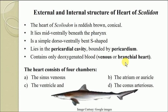The heart of Scoliodon is four-chambered, which is a characteristic feature of cartilaginous species. It contains four chambers: namely, sinus venosus, then the atrium also known as the auricle, then the ventricle which is the third chamber, and the fourth one is the conus arteriosus. There are two major chambers and two accessory chambers — the accessory chambers being the sinus venosus and the conus arteriosus.